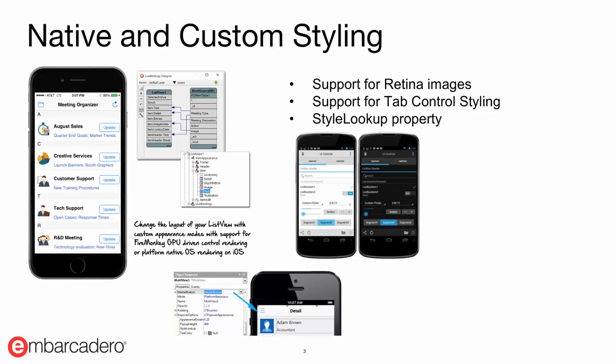With RAD Studio we provide both native and custom styling for iOS, Android, Windows, and Mac applications using the FireMonkey framework. We also have support for retina images so you can use the TImage component to load in images in different sizes — if you're wanting to support multiple different iOS or Android devices, it's recommended to load in images that support multiple resolutions. We also have support for tab control styling and a style lookup property that you can leverage for all the different UI controls, allowing you to quickly change the look of a user interface control.